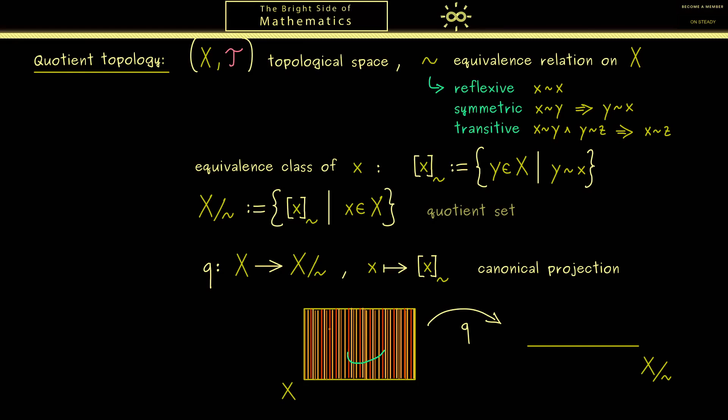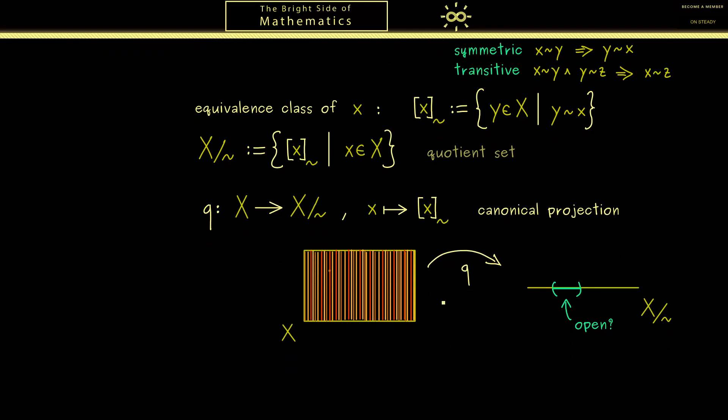Now please recall here on the left hand side we know what open sets are. For example this subset here is an open set when it lies in T. However here on the right hand side open does not make sense yet. Hence we need a suitable definition for open sets here in our quotient set. This means that in some sense this should be compatible to the openness in the original set X here on the left hand side. And now you might already guess that this should work with the map q.